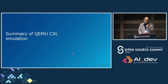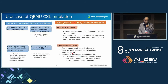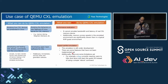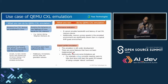Here is a summary of QEMU CXL emulation — what you can do and what you cannot do. First use case: studying how CXL devices are presented in Linux. Next: studying the behaviors of new Linux kernel features for CXL memory, for example memory tiering, weighted interleave, etc.